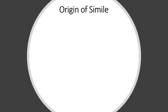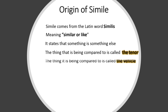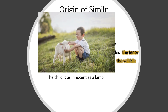Now we must know the origin of simile. Simile comes from the Latin word 'similis,' meaning similar or like. There are two parts to a simile: the thing being compared is called the tenor, and the thing it is being compared to is called the vehicle. For example, in 'The child is as innocent as the lamp,' the child is the tenor and the lamp is the vehicle, with innocence being the quality compared between them.